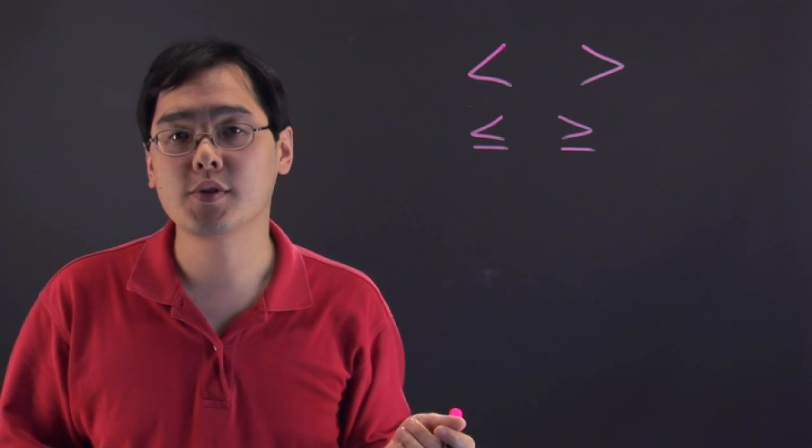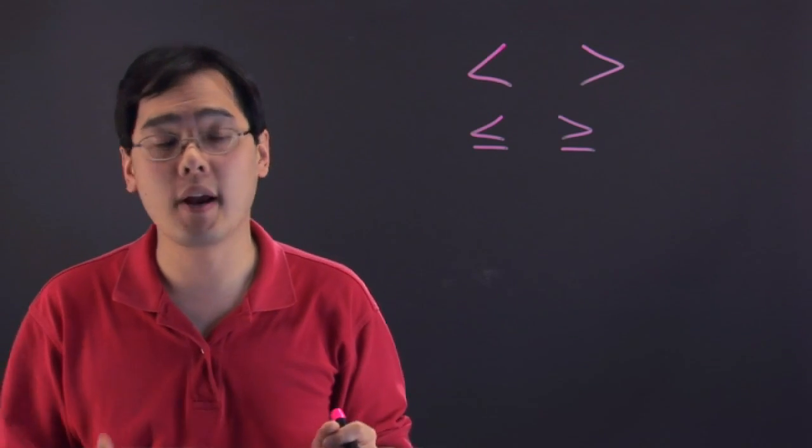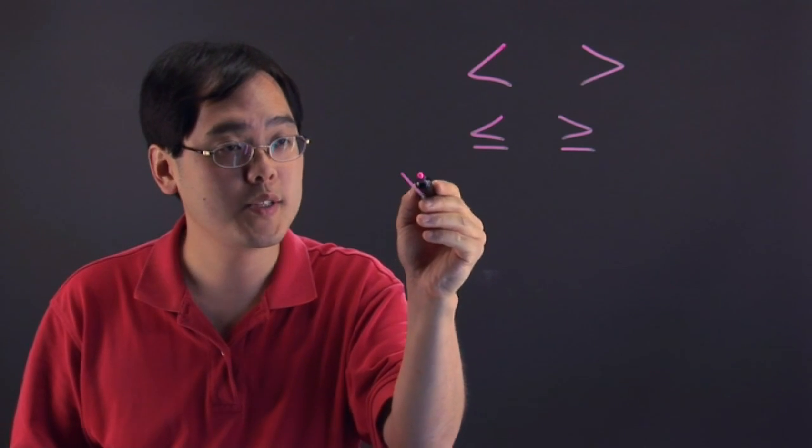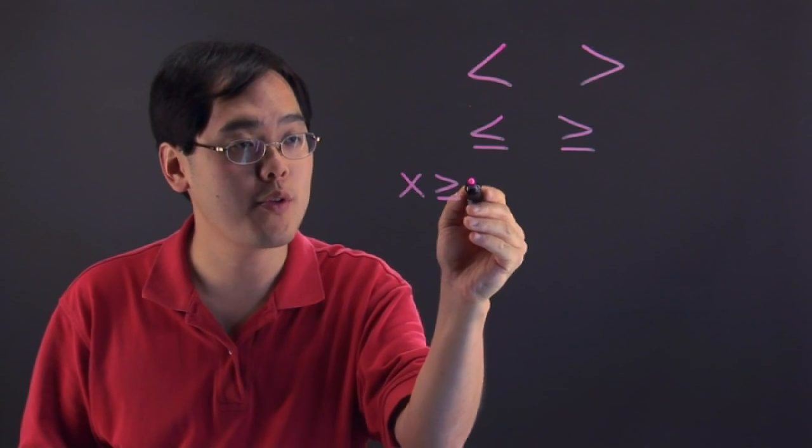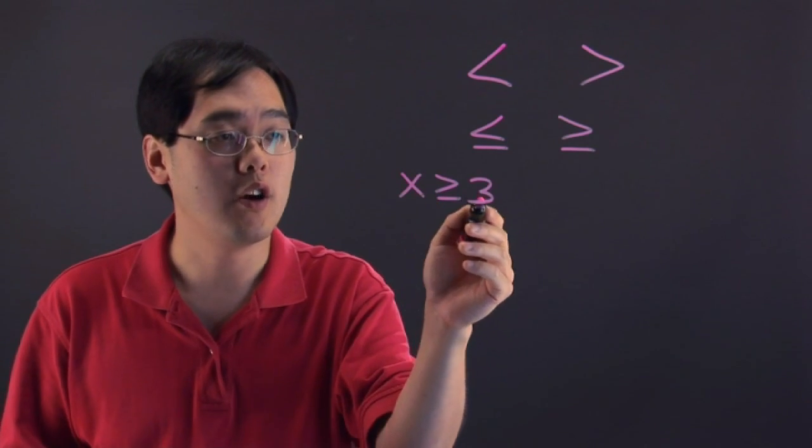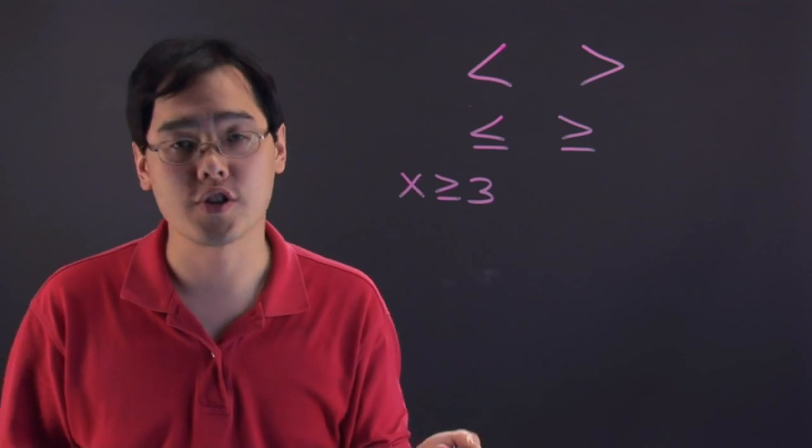So you'll often see these symbols used in equations or simply comparisons between two values. For example, you might see something like x greater than or equal to 3. So you're talking about numbers for x that are equal to 3 or larger than 3.